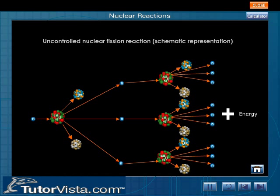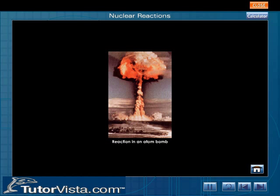This type of reaction, in which a particle that initiates the reaction is produced as one of the products of the reaction, is referred to as a chain reaction. The reaction taking place in an atom bomb is an uncontrolled fission reaction.